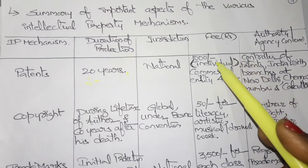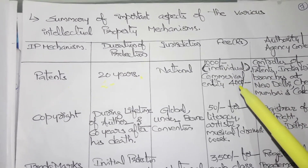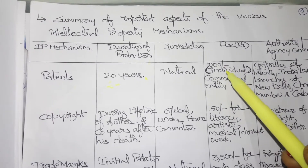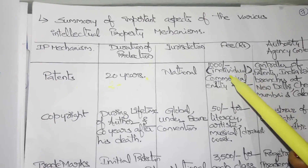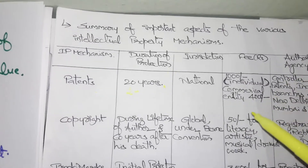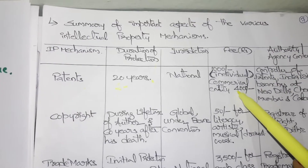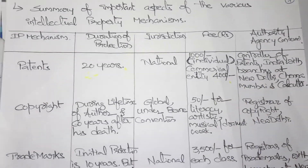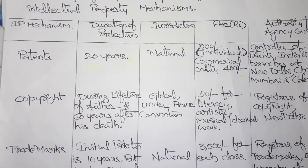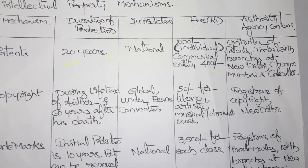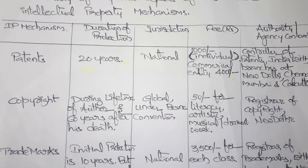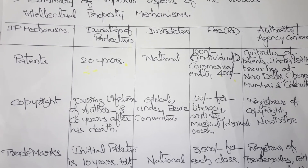The fee to obtain a patent is 1,000 rupees for an individual who has created a product using their own knowledge. If the product was created commercially — meaning by more than two members — the fee is 4,000 rupees. The authority is the Controller of Patents, with offices in New Delhi, Chennai, Mumbai, and Kolkata.